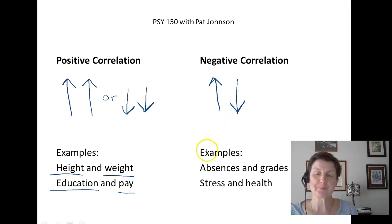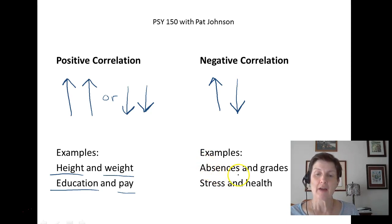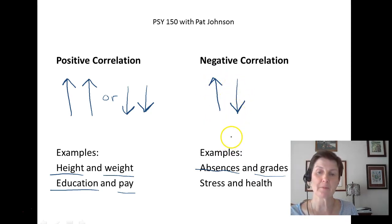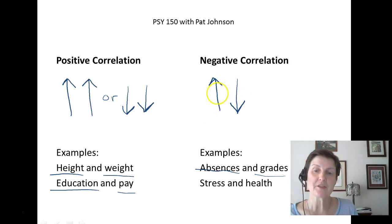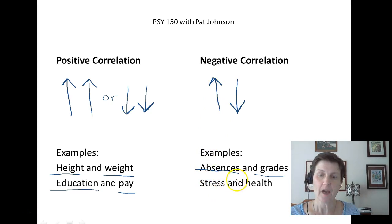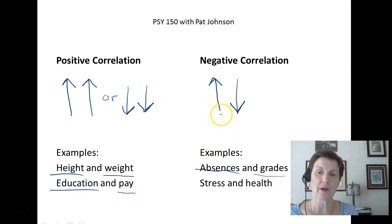A negative correlation doesn't mean bad — it just means our two variables are moving in opposite directions, so as one goes up the other goes down. An example is absences and grades: as absences go up, grades tend to go down. Another example is stress and health: as stress goes up, our health tends to go down, or as health goes up, stress tends to go down.